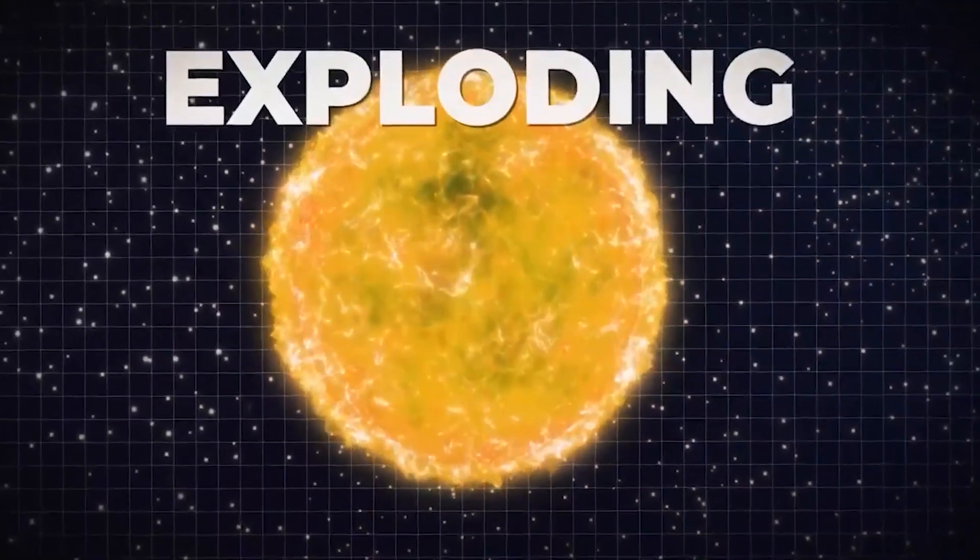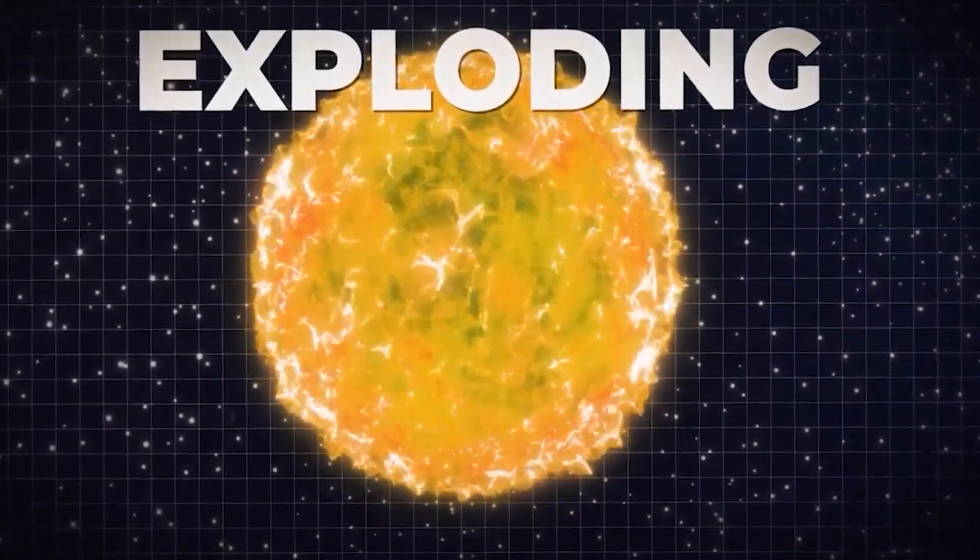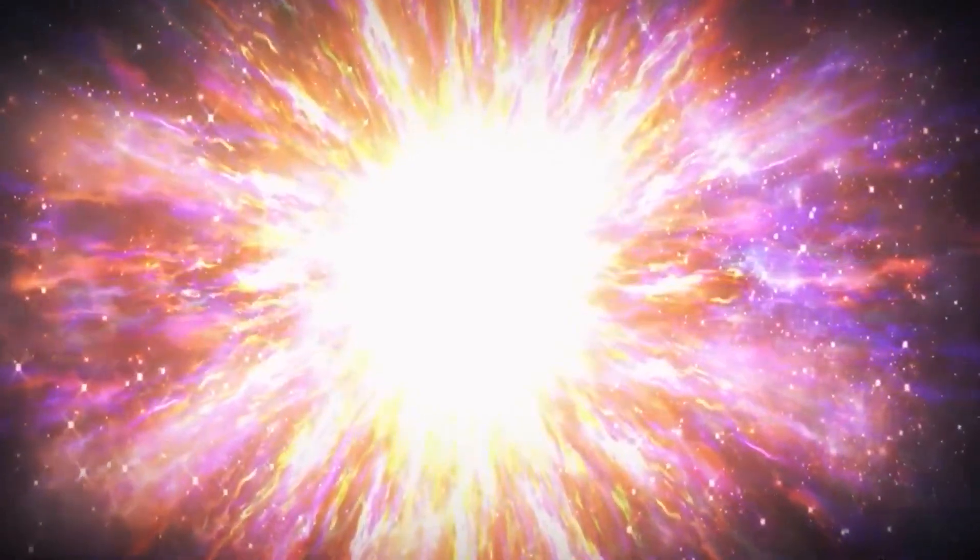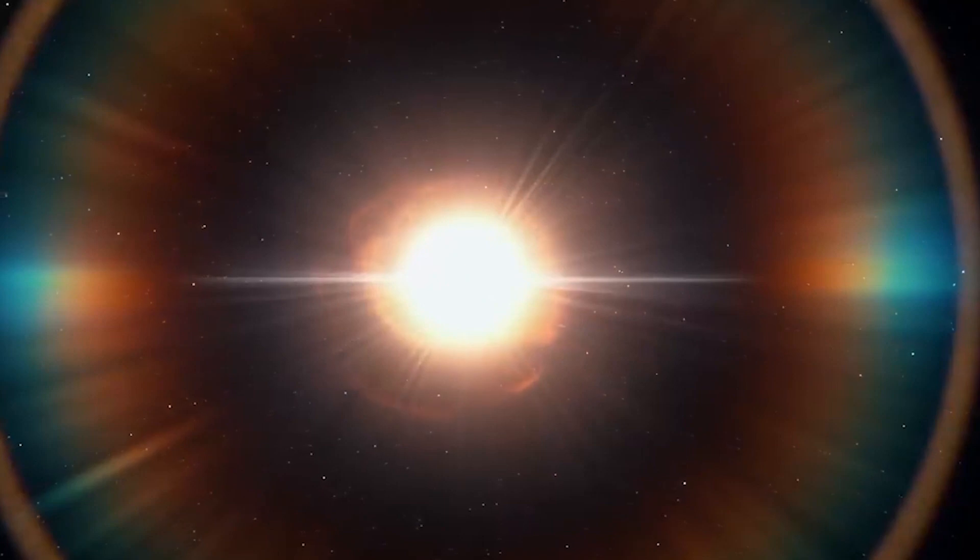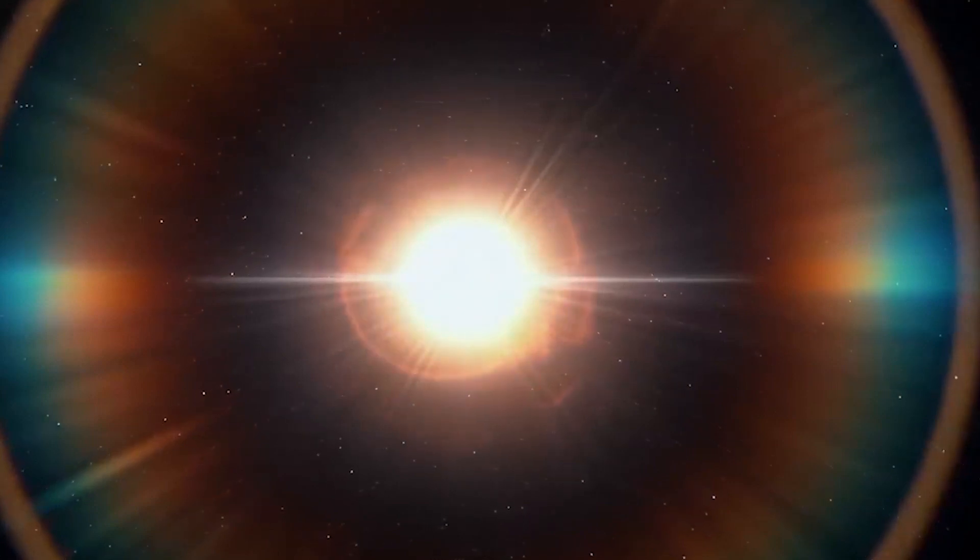But apart from a meteor strike, Earth might have also witnessed another mass extinction event that could be caused by a supernova. Scientists estimate that on average about 20 supernovae occur in a galaxy like ours every thousand years, but we have only observed five in the last millennium.